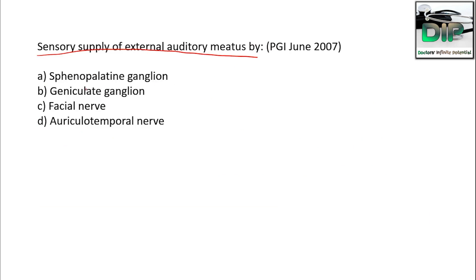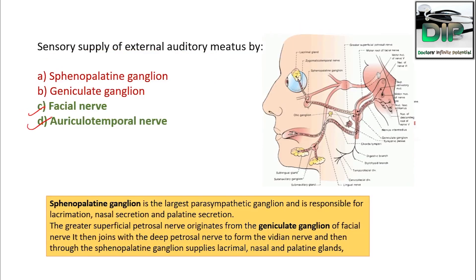Sensory supply of the external auditory meatus is by — sphenopalatine ganglion, geniculate ganglion, facial, or auriculotemporal nerve? This was asked in PGI June 2007. The correct answer is facial and auriculotemporal nerve. The sphenopalatine ganglion is the largest parasympathetic ganglion, responsible for lacrimation, nasal secretion, and palatine secretion.